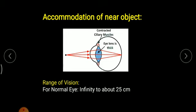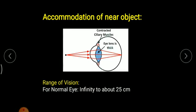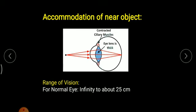The next question is: what is the range of vision? For a normal human being, the range of vision is always from an infinite distance to about 25 centimeters — this is the range of vision for a normal human being.